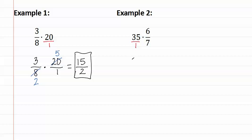Now let's rewrite this. Thirty-five over one times six over seven.